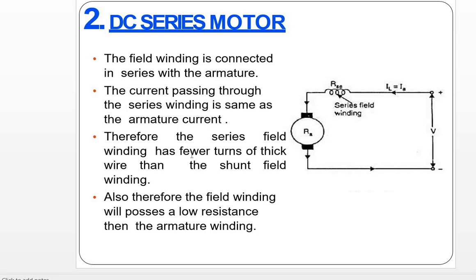The series field winding has few turns of thick wire. The field winding has a low resistance compared to armature winding, which means that if the cross-sectional area is more, the resistance is less.